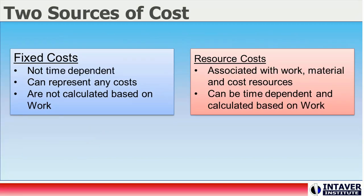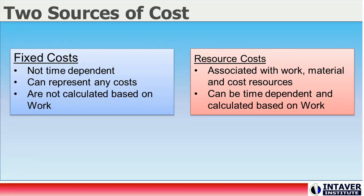In Risky Project, costs can be divided into two main categories. Fixed costs can be used to represent any costs that are not time-related due to resource allocation — typically costs not related to specific resources. Resource costs are based on the hourly rates or costs for use of resources assigned to activities, and can be used to calculate time-dependent costs using resource rates. Cost type resources are a special case, acting as a hybrid method that shares characteristics of both fixed costs and resource costs.